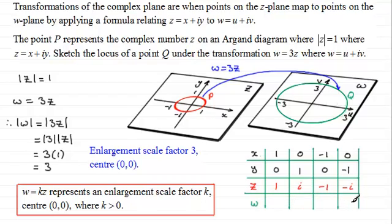Now, w equals 3 times z. So if z is 1, 3 times that is going to give us 3. 3 times i is 3i, 3 times minus 1 is minus 3, and 3 times minus i is minus 3i.